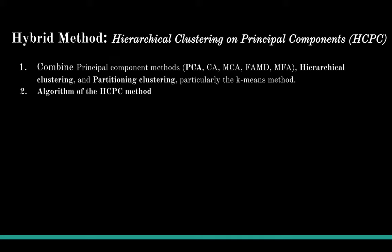There are many reasons to use HCPC. For a large continuous variables dataset, principal component analysis can be used to reduce the dimensionality of data into a few continuous variables containing the most important information. The PCA step can be considered a denoising step, which can lead to more stable clustering. For a categorical dataset, in order to perform clustering analysis on categorical data, the corresponding analysis — CA for analyzing a contingency table, and multiple correspondence analysis (MCA) for analyzing multidimensional categorical variables — can be used to transform categorical variables into a set of few continuous variables, i.e., the principal components. The cluster analysis can then be applied on the MCA or CA results.